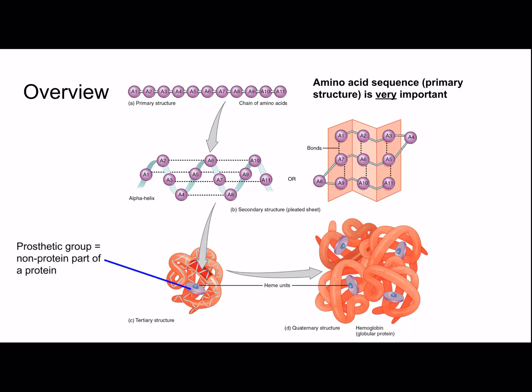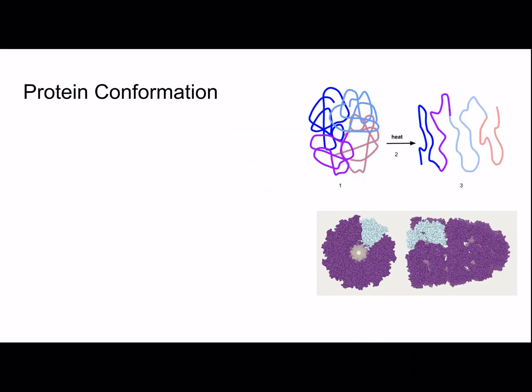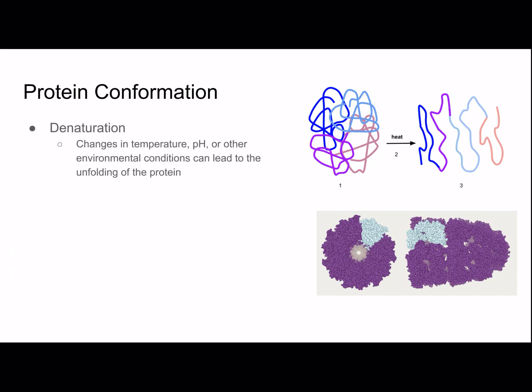A prosthetic group is a non-protein part of a protein — in this case, it's a heme group. It's not made of protein, it's just in addition to a protein. Protein denaturation is when changes in temperature, pH, or other environmental conditions cause the protein to unfold. This is because the intramolecular forces holding the protein together may weaken due to changes in the environment, so the protein can no longer function properly. As you can see in the picture, when heat is added, the protein will unfold and is no longer able to do its function.